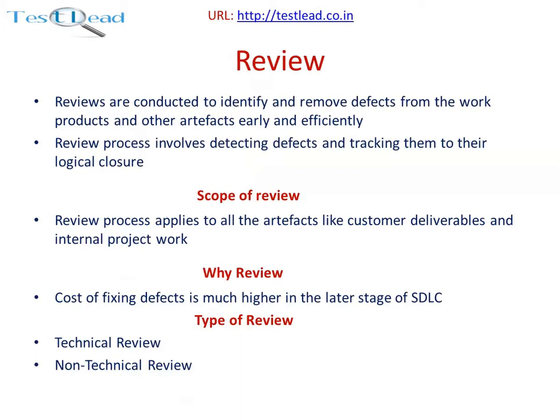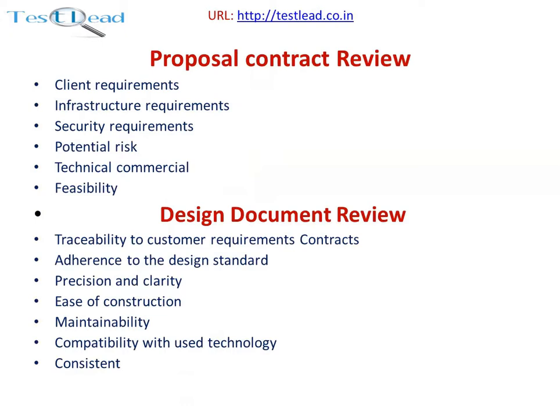Why review? The cost of fixing a defect is much higher in the later stages of SDLC. For example, any inconsistency or defect found at the time of design has a lesser cost of fixing compared to defects found at the development stage, testing stage, or production stage. Types of review include technical review and non-technical reviews such as proposal and contract review, client requirements, infrastructure requirements, security requirements, and potential risk — technical, commercial, and feasibility.